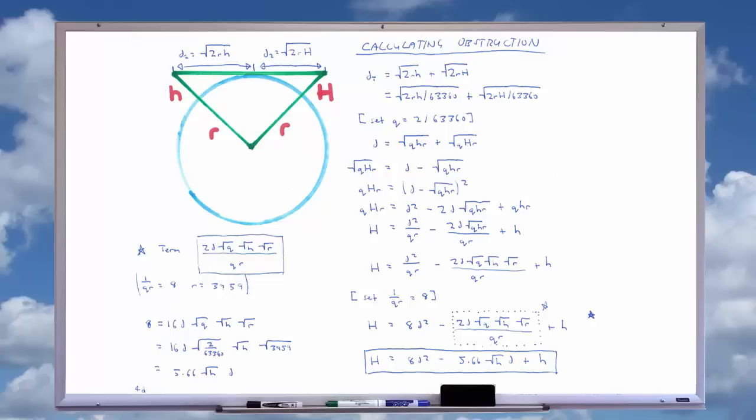Divide both sides by qr, expand the right hand side, apply the product property of square roots, then set 1 over qr to equal 8.